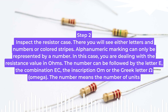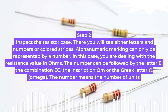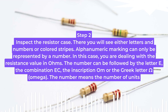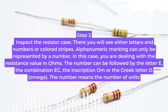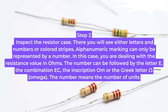Step 2: Inspect the resistor case. There you will see either letters and numbers or colored stripes. Alphanumeric marking can only be represented by a number, in which case you are dealing with the resistance value in ohms. The number can be followed by the letter E, the combination EC, the inscription OM, or the Greek letter omega. The number indicates the number of units.